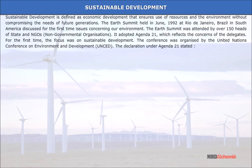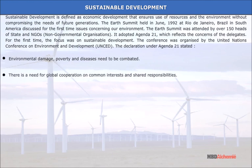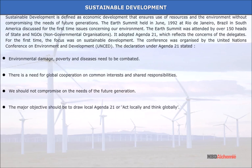The Earth Summit adopted Agenda 21, which reflects the concerns of the delegates. The conference was organized by the United Nations Conference on Environment and Development (UNCED). The declaration stated that environmental damage, poverty and diseases need to be combated, global cooperation on shared responsibilities is needed, and we should not compromise the needs of future generations. The major objective was to draw up Local Agenda 21 — act locally and think globally.